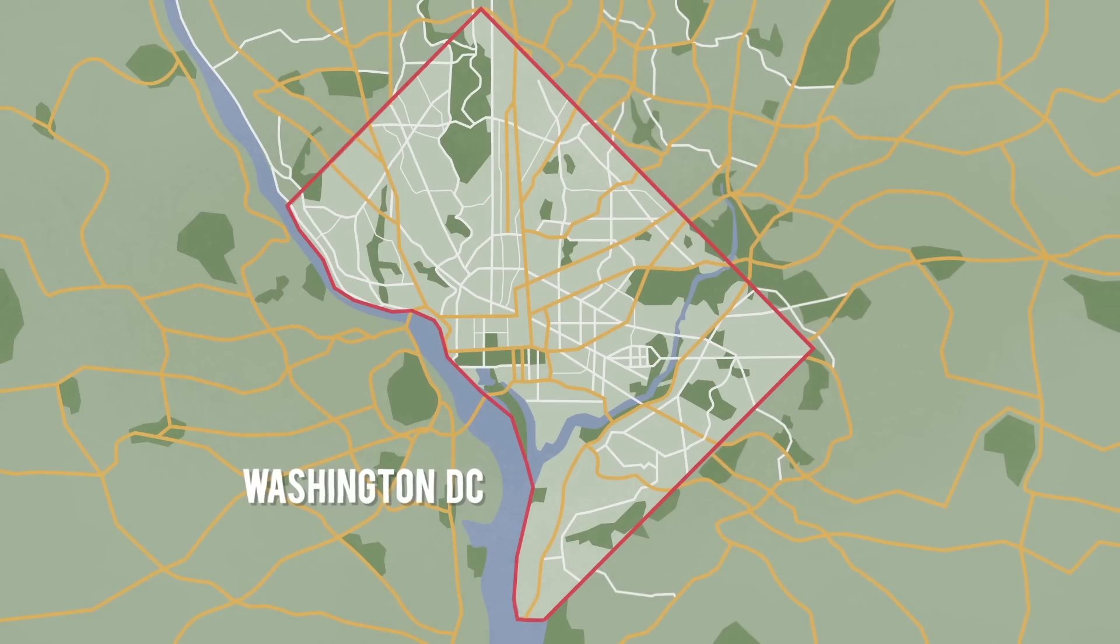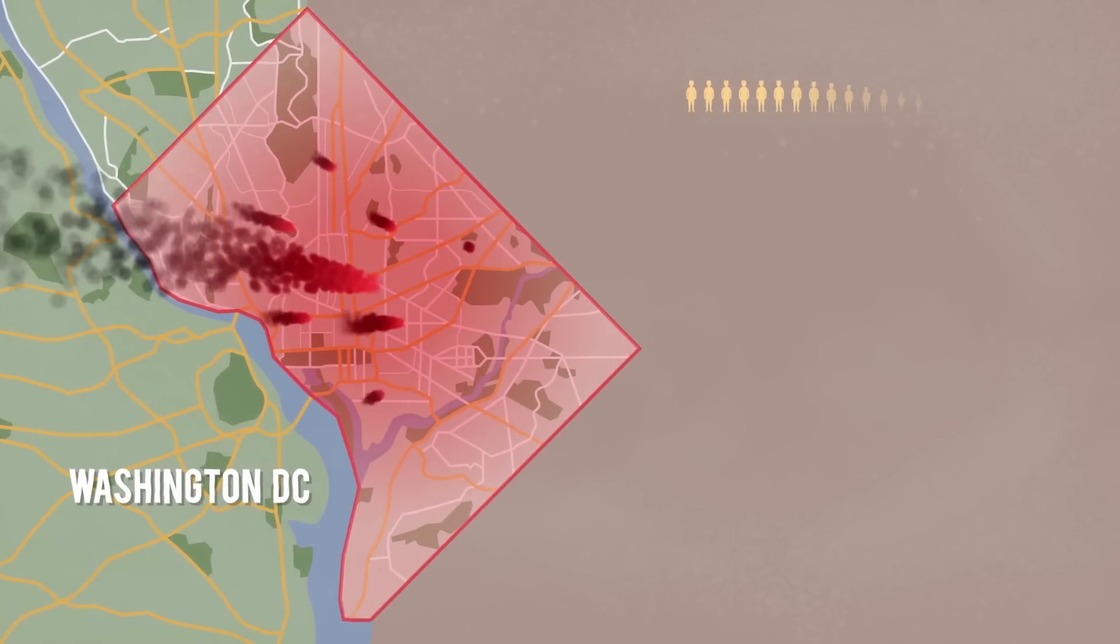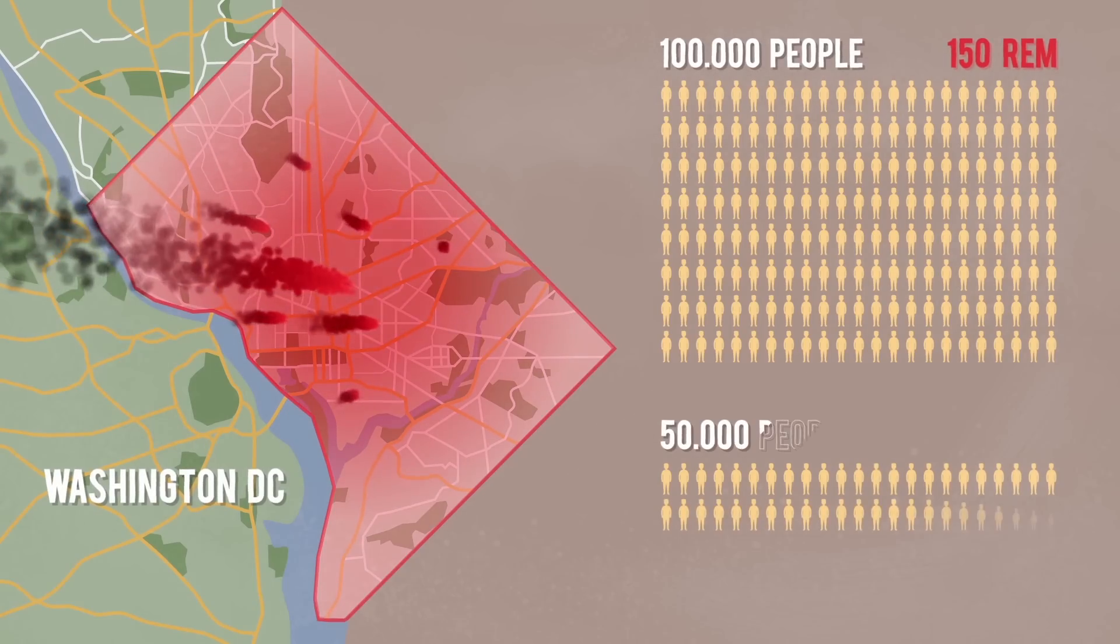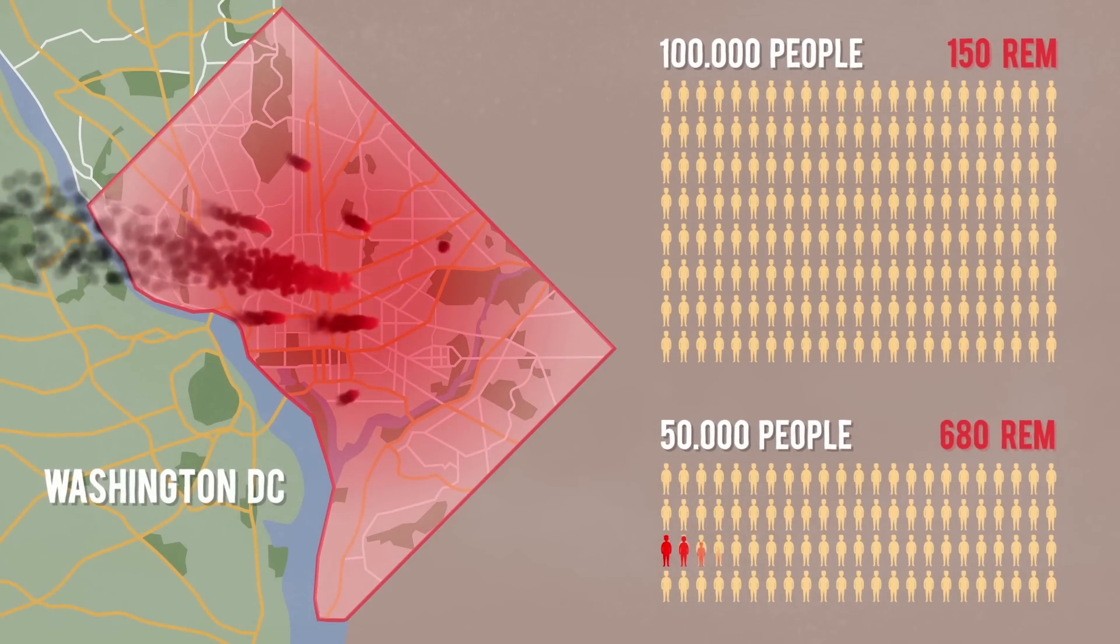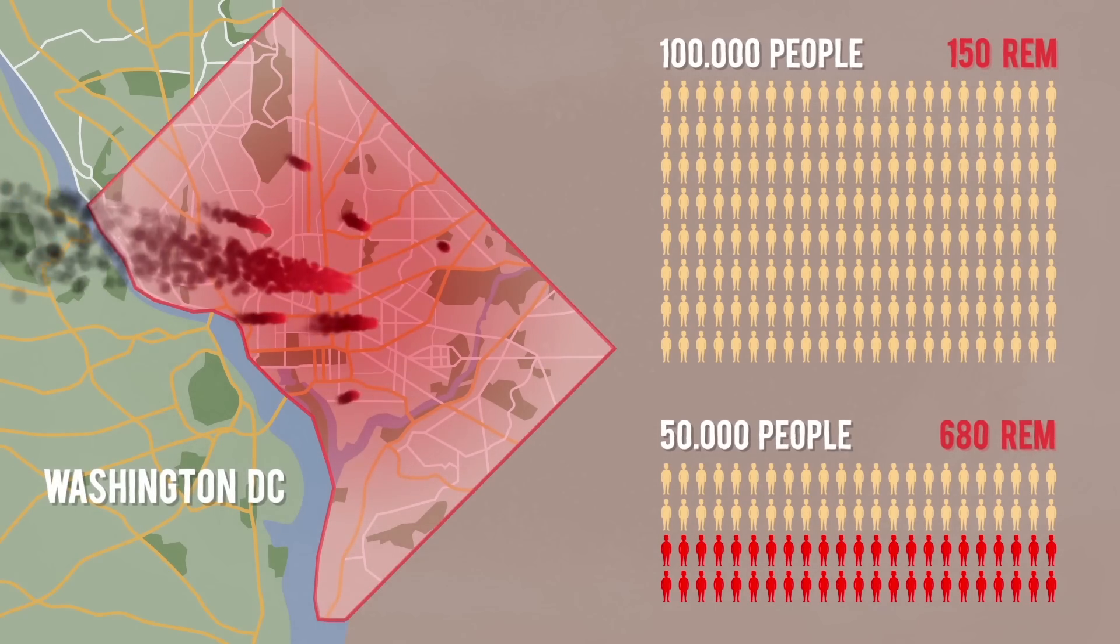One study shows that a theoretical 10-kiloton ground-level nuclear explosion in Washington, D.C. would lead to about 100,000 people receiving 150 rem, and about 50,000 receiving 680 rem. But even if a gamma ray bomb only exposed you to 300-600 rem, you'd only have a 50% chance of survival over the next 60 days.